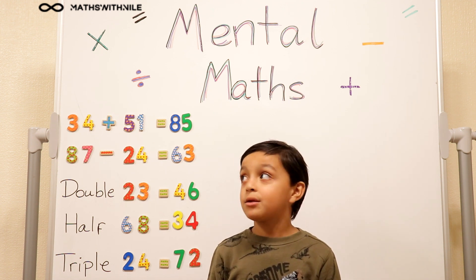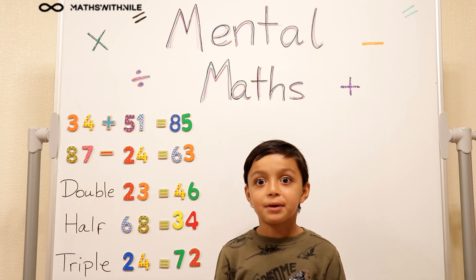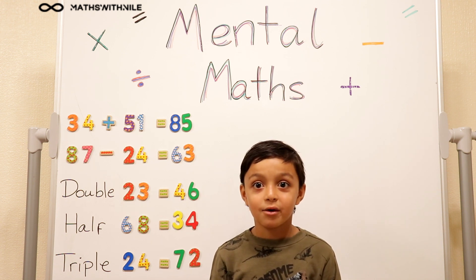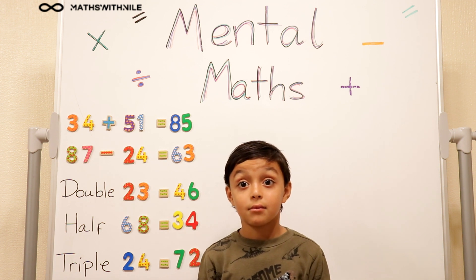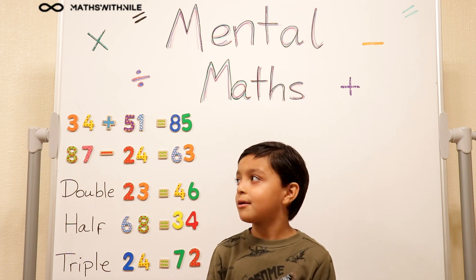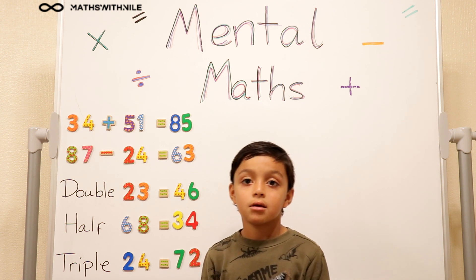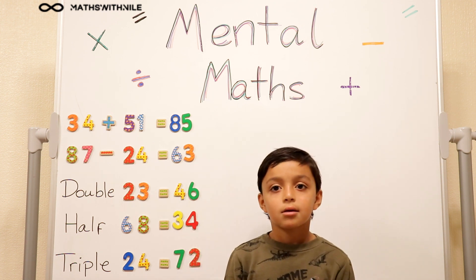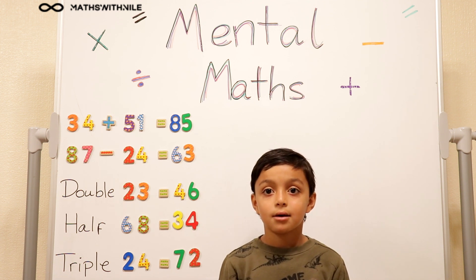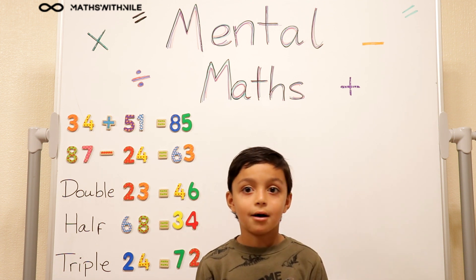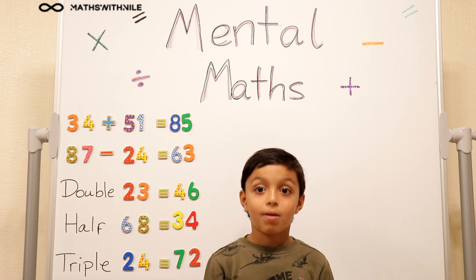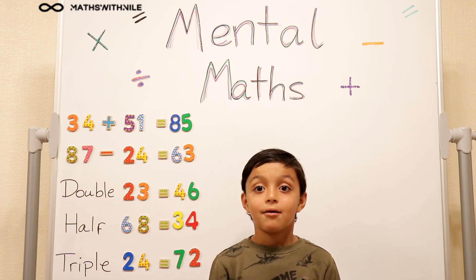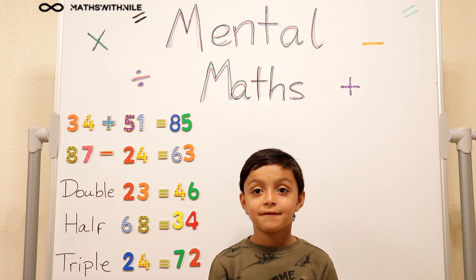So if we split it into 2, then it wouldn't equal 7. Let's think about splitting it into 6 and 1. 6 and 1? Yes. So if we can split 7 into 6 and 1, what's half of 6? 3. And what's half of 1? A half. So we put those 2 numbers together and we get 3 and a half. 3 and a half. Very good.